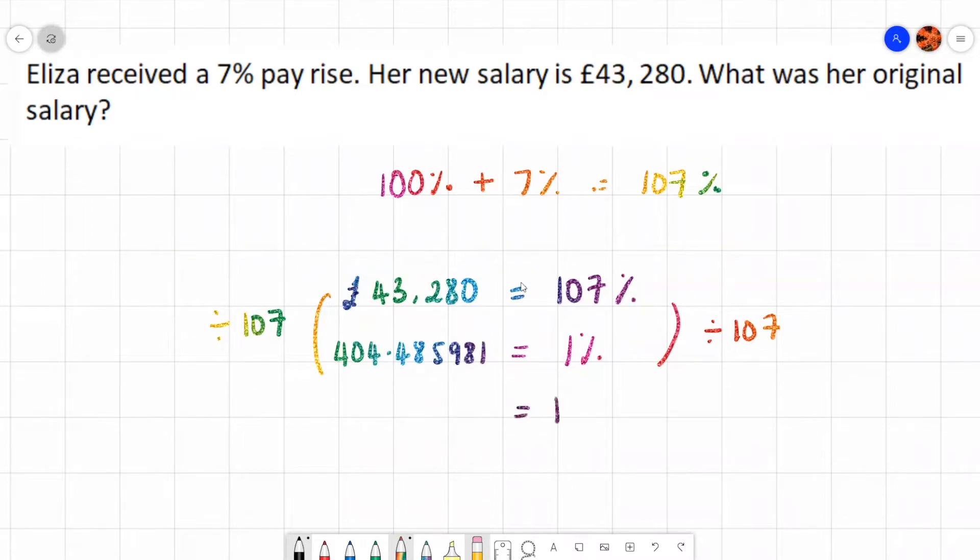Well, we want to work at 100% now. So what do we do to 1% to get 100%? Well, we times by 100. So we have to do exactly the same on the other side. We have to times that by 100 as well. So if I times that by 100 on my calculator, I end up with 404.48 and then 60.